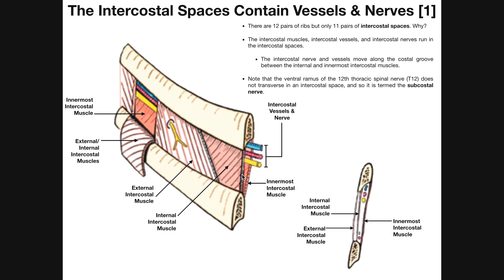If you were to think about the order of a needle passing superficially through the side, you would hit the external intercostal muscle, then the internal intercostal muscle, then pass through the area with the vessels and nerve, and finally pass through the innermost intercostal muscle. Where tissue is peeled away in this image, that would be both the external and internal intercostal muscles, allowing us to see the intercostal artery, vein, and nerve at this level, with the innermost intercostal muscle deep to those.